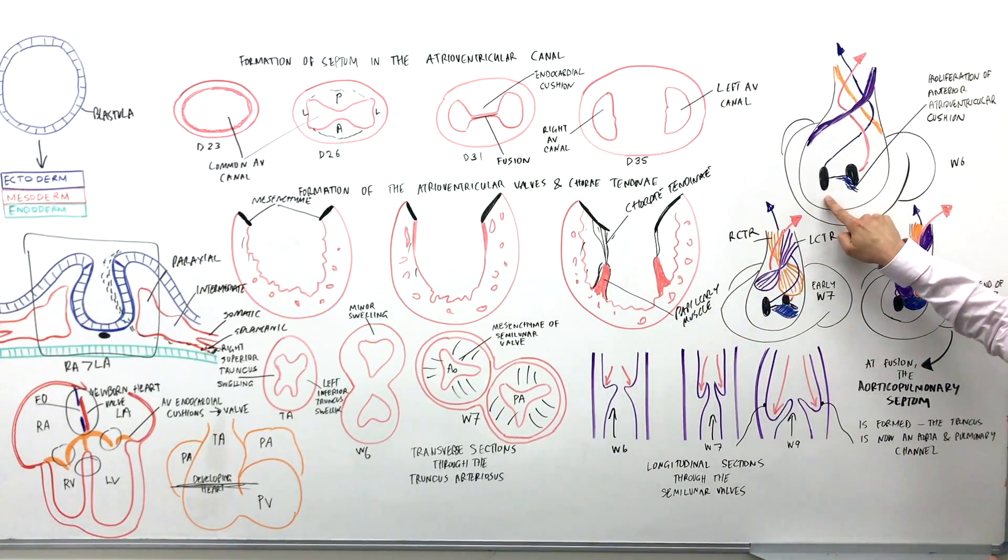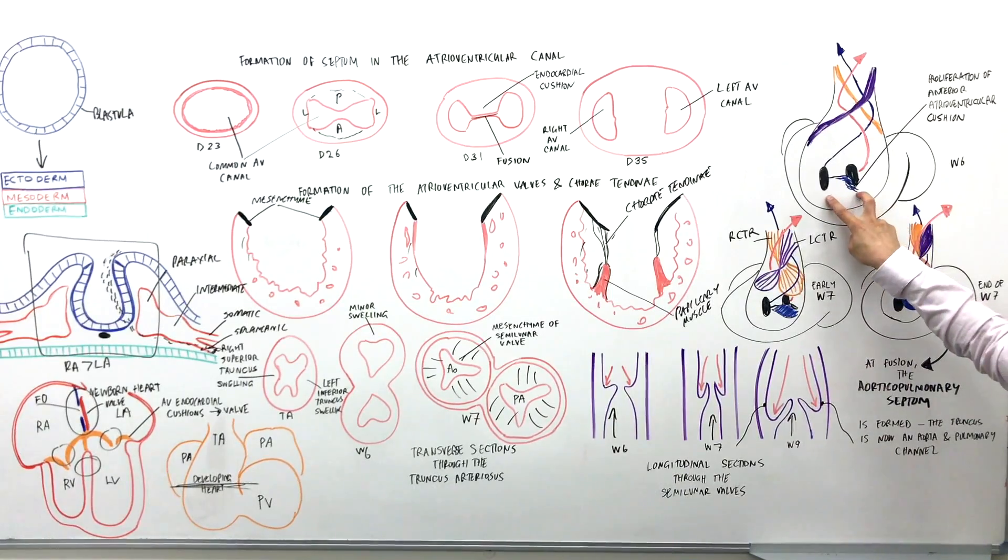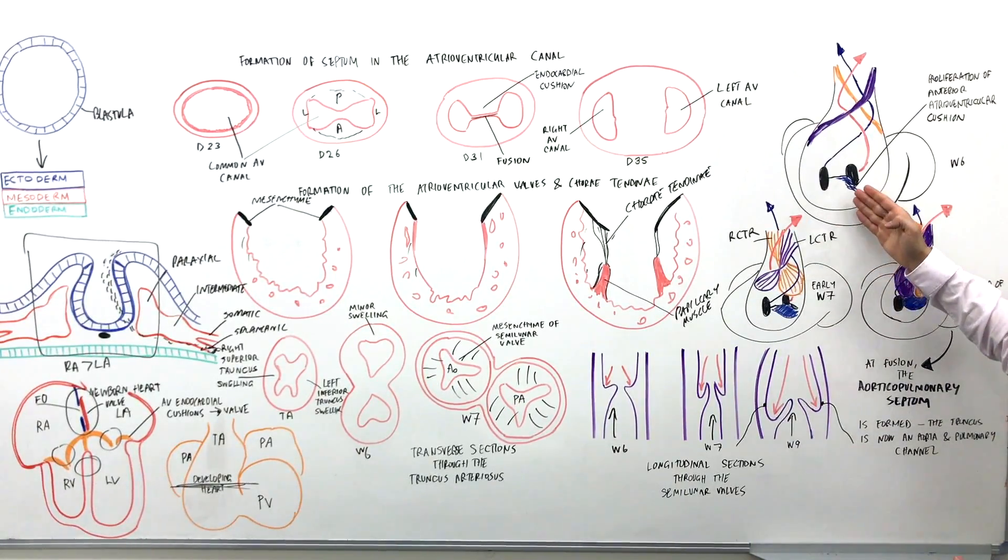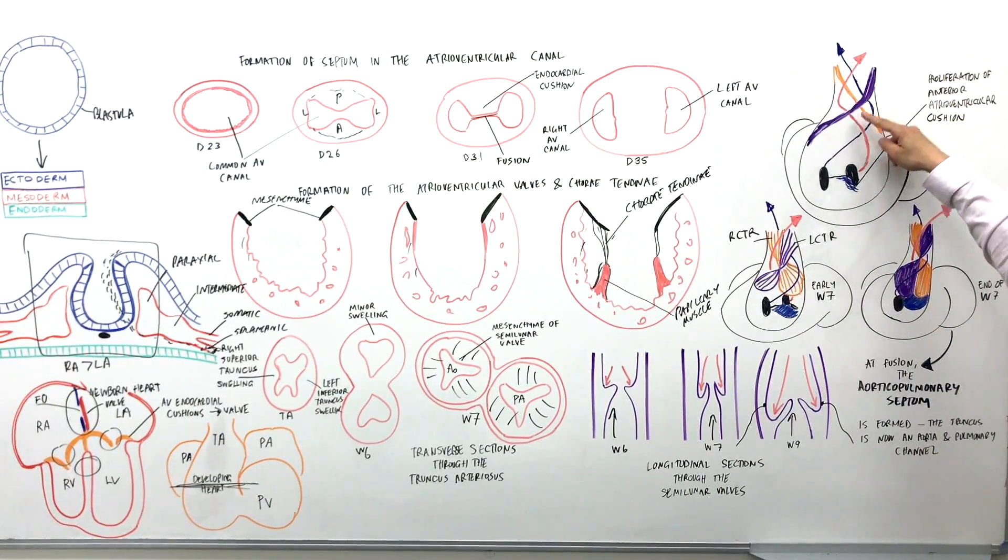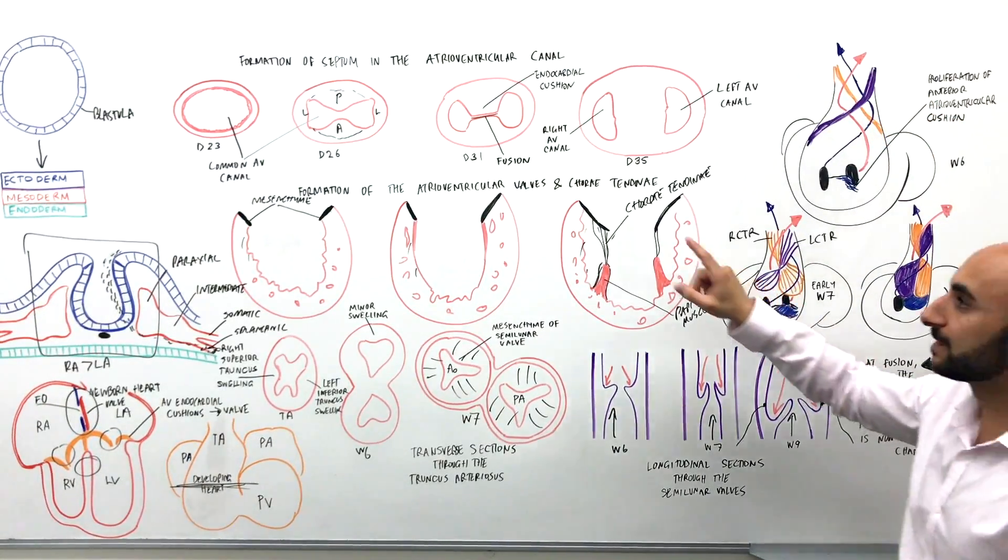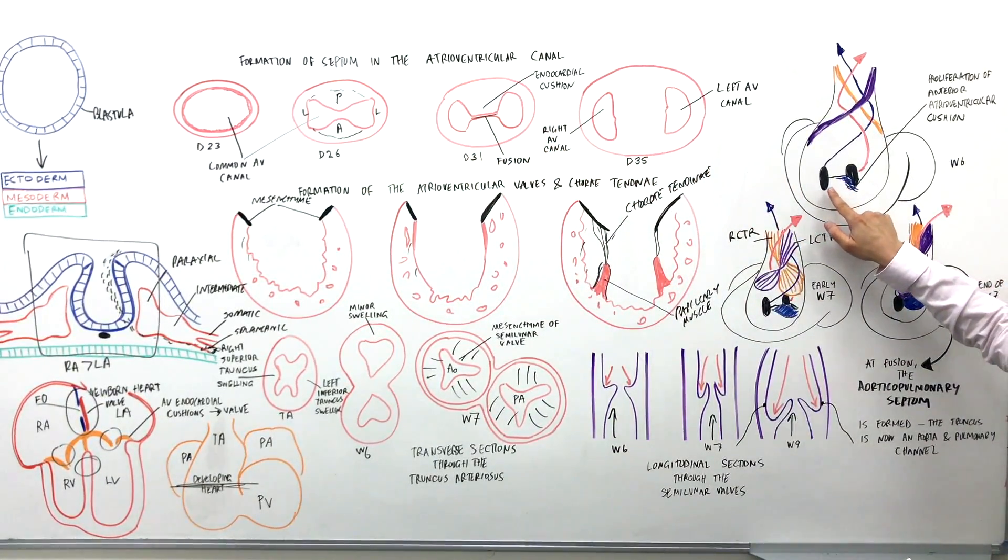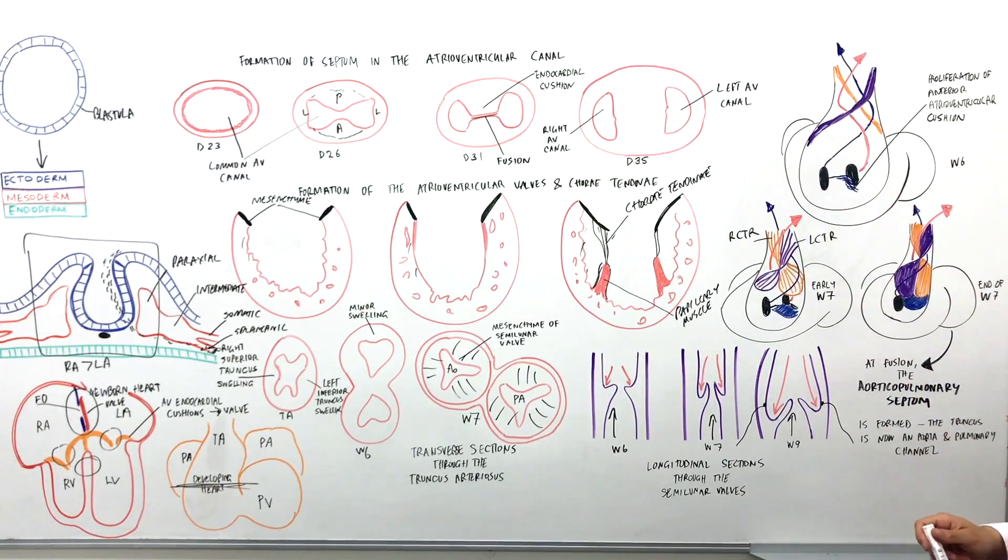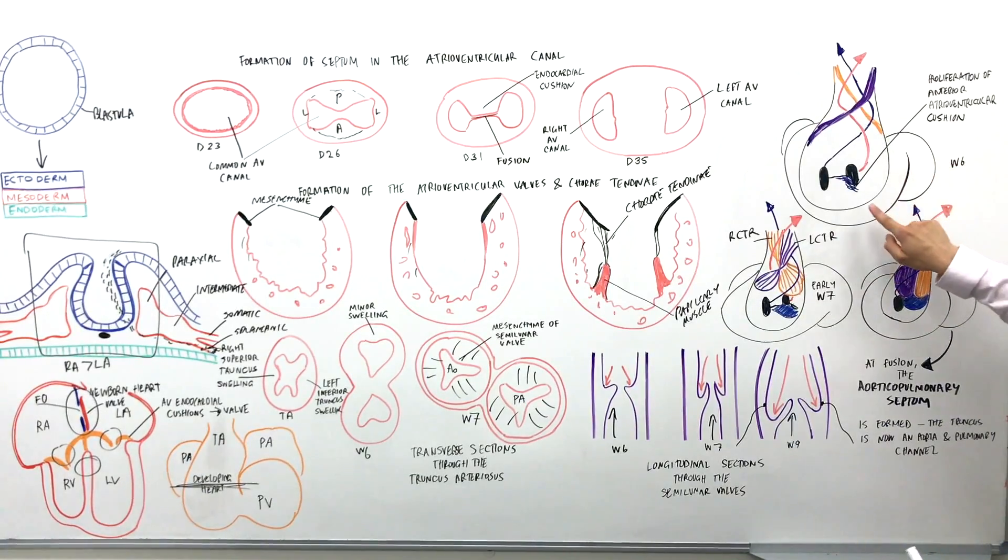Now these two valves will be separated, and with that separation you will have the formation of this aorticopulmonary septum. Now what we saw over here is what happens to separate these two lumens.